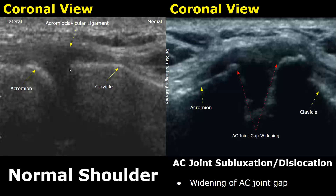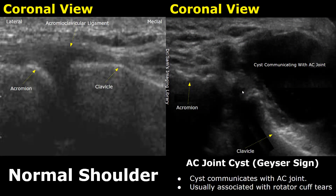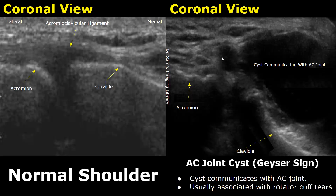This is a case of an AC joint cyst. The cyst usually communicates with the acromioclavicular joint, and this type of appearance is known as the geyser sign. Usually this AC joint cyst is associated with rotator cuff tears.